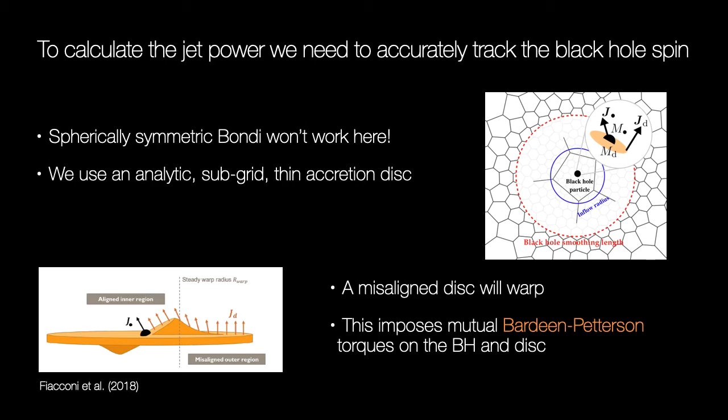Many black hole accretion models use the spherically symmetric Bondi prescription, but the Blandford-Znajek mechanism requires accurate tracking of the black hole spin, so we can't just ignore the angular momentum of the accreting gas. We model the black hole as being surrounded by a subgrid thin accretion disk and use known analytic solutions to follow the mass and angular momentum transport through the disk and onto the black hole.